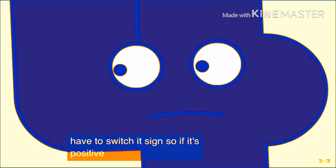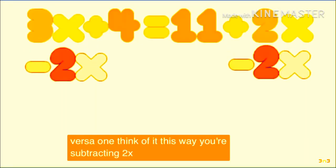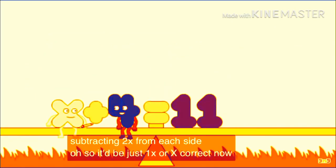You have to switch the sign inside. So if it's positive, it turns negative, and vice versa. Why? Think of it this way: you're subtracting 2x from each side. Oh, so x is just 1x? Correct.